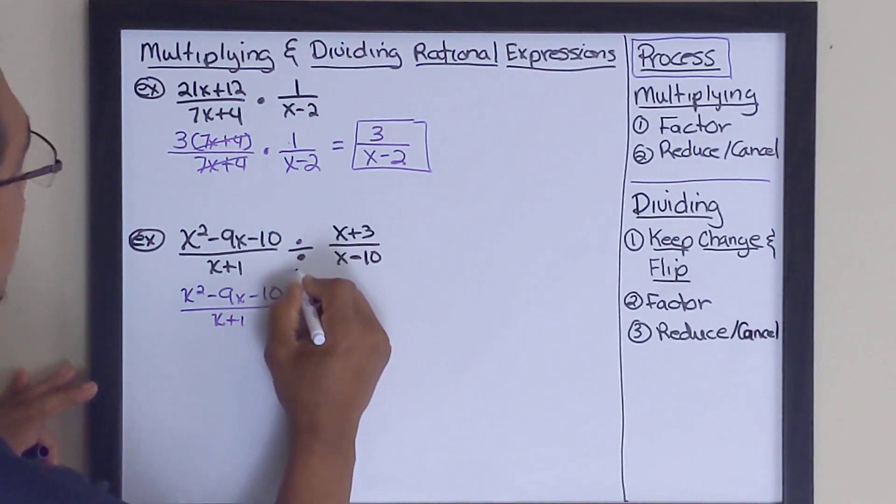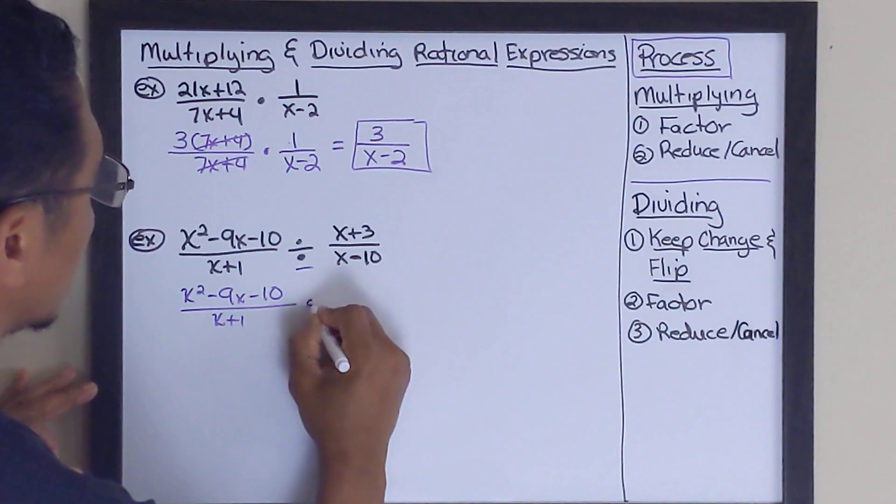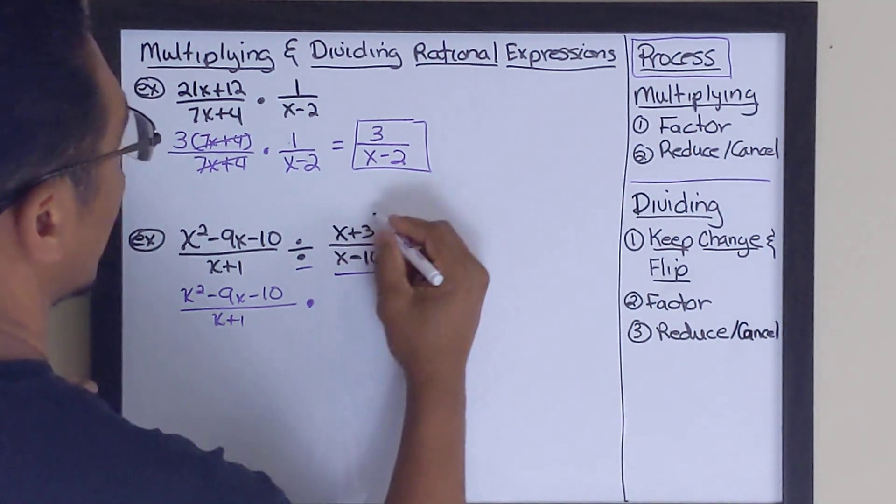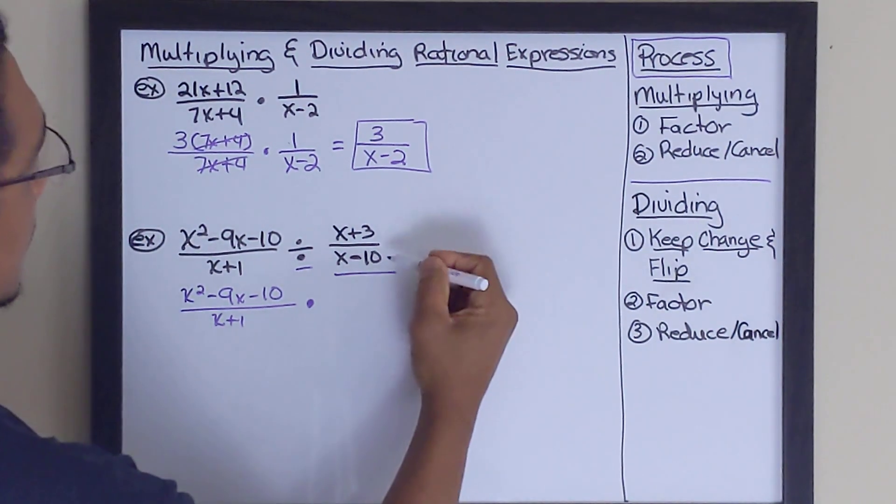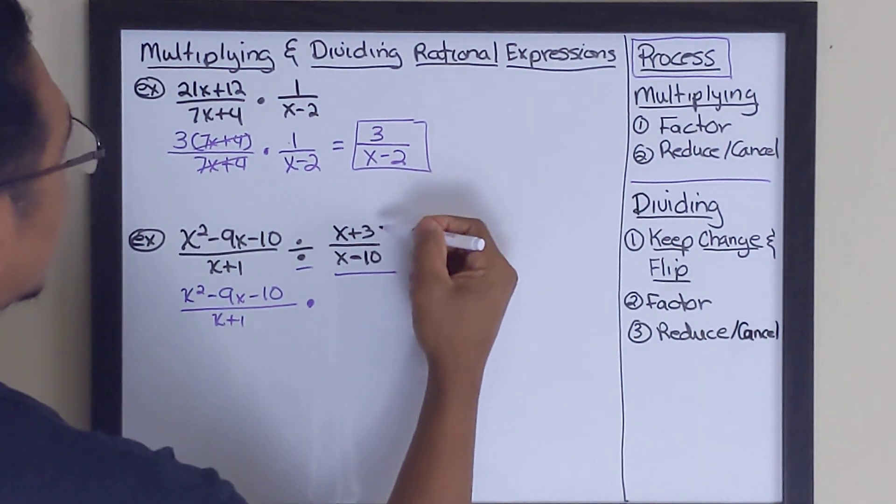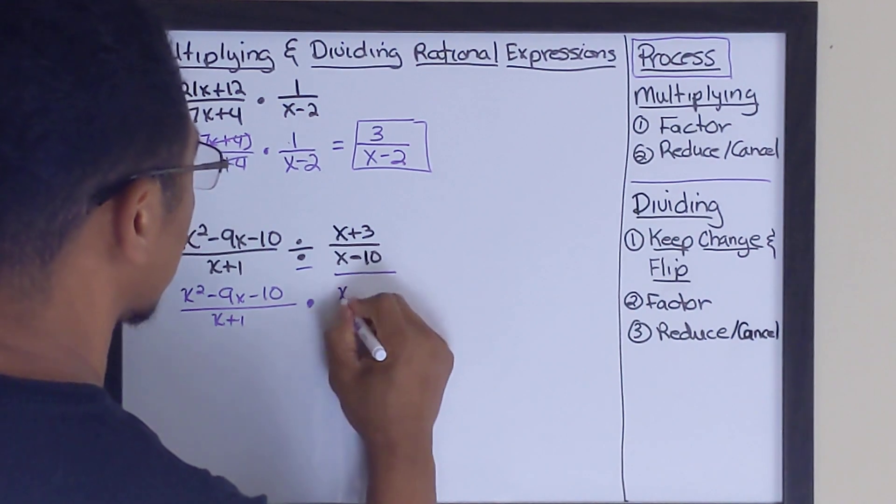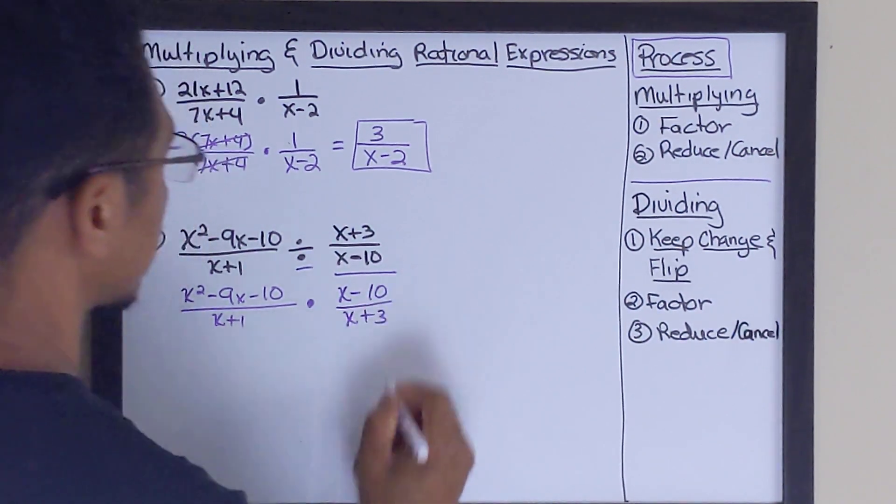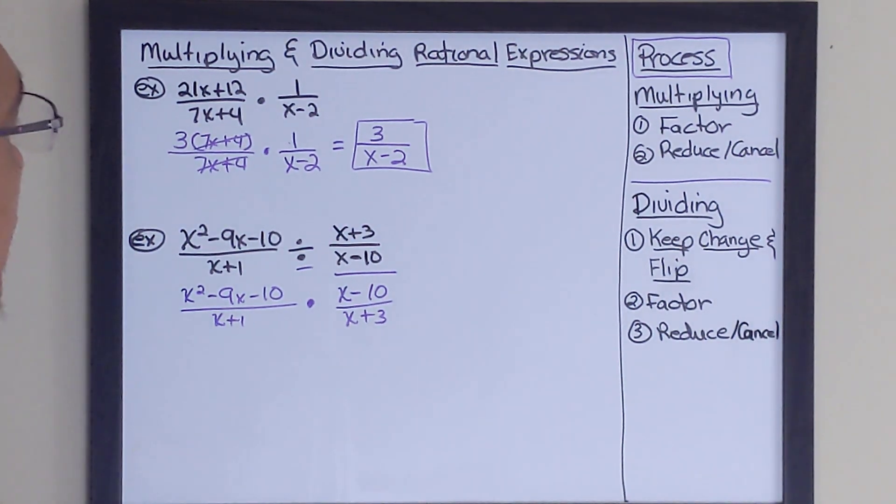And then we'll change the operator from division to multiplication. That's what change is. And then we'll flip whatever this expression is. So whatever the denominator is, it becomes a numerator and vice versa. So this becomes x minus 10 all over x plus 3. At which point, we've got the keep change and flip.